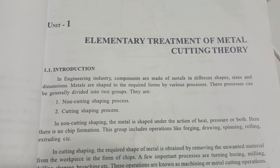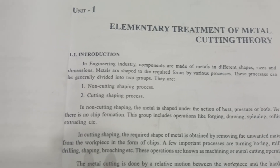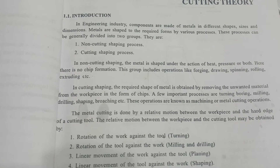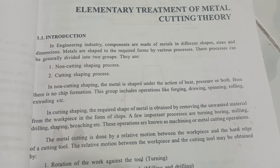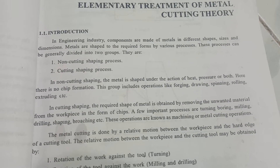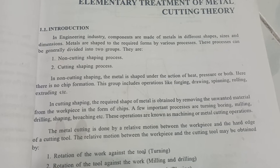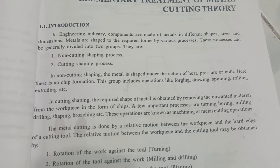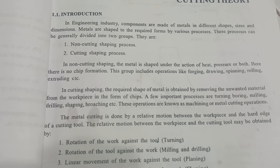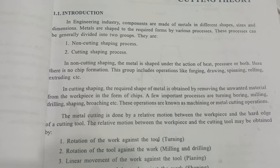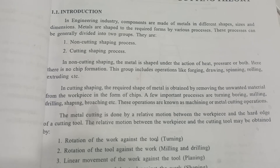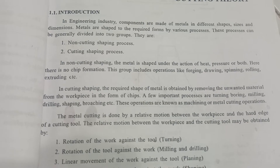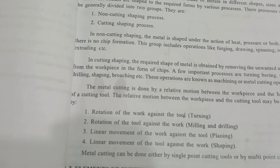Non-cutting shaping includes operations like forging, drawing, spinning, rolling, and extrusion. In cutting shaping, the required shape of metal is obtained by removing the unwanted material from the workpiece in the form of chips. A few important processes are turning, boring, milling, drilling, shaping, and broaching. These operations are known as machining or metal cutting operations.